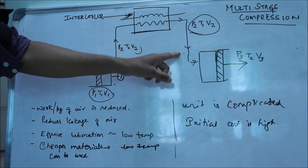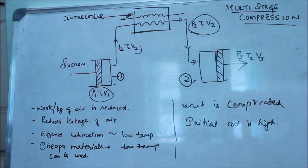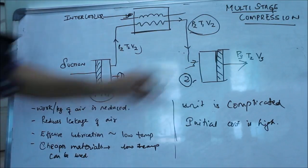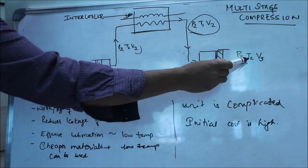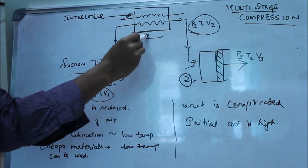From here, it is passed into the second cylinder where it gets compressed to the required delivery pressure. P2, T1, V2 goes into the second cylinder and comes out as P3, T2, and V3. We can see that the rise in temperature is not too much because there is an intercooler in between.